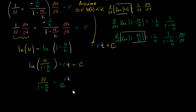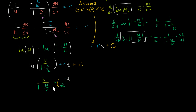So we have n over (1 minus n/k) equal to some constant times e to the rt, and now we just need to solve for n.